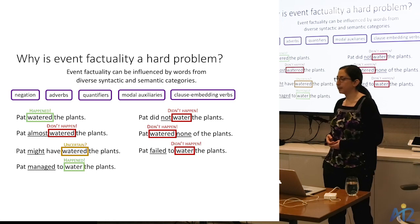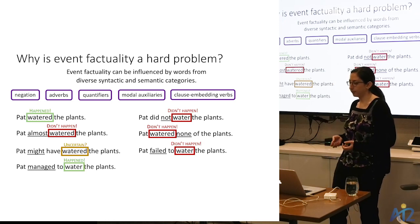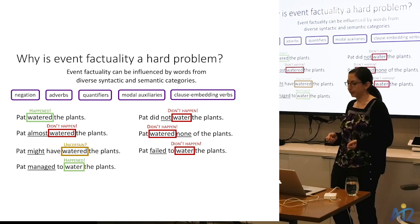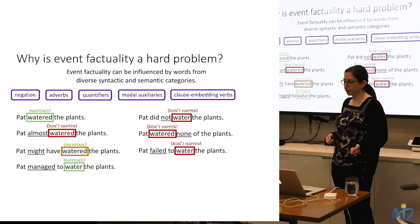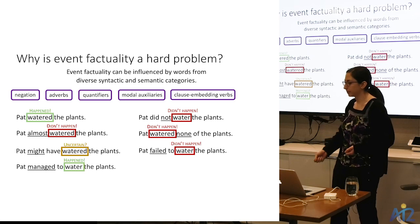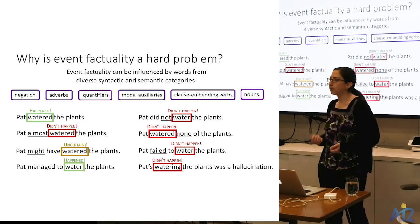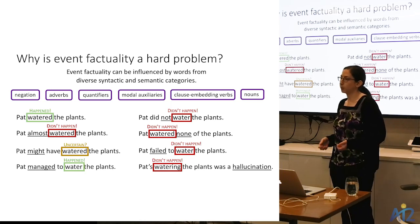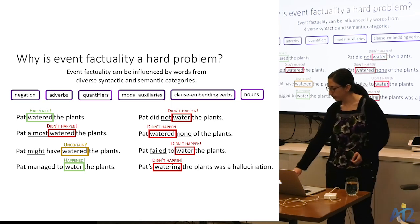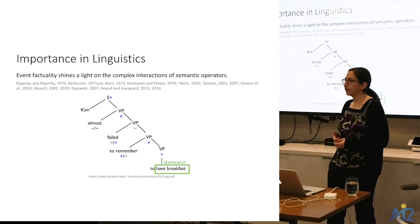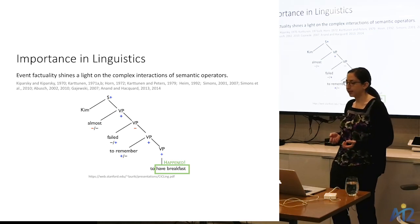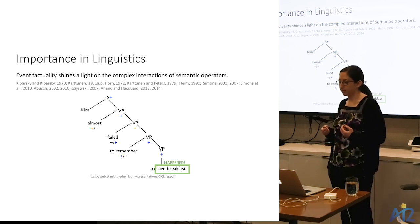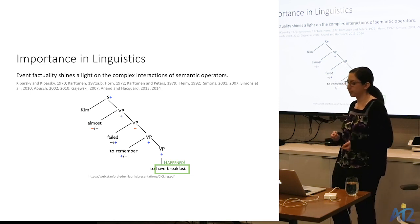Clause-embedding verbs exhibit a very rich set of behaviors with respect to the factuality of embedded events — for example, the differences between 'Pat failed to water the plants' versus 'Pat managed to water the plants.' Even nouns can influence factuality, as in 'Pat's watering the plants was a hallucination.' Event factuality is of great interest in linguistics because it shines a light on the complex interactions of semantic operators and how they compose up a tree.